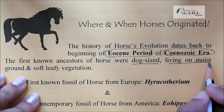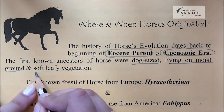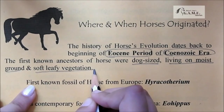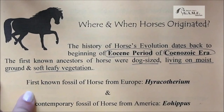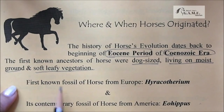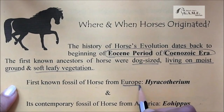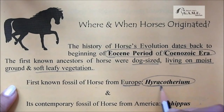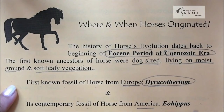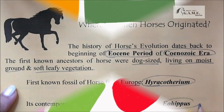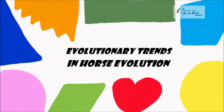The first known fossil of horse from Europe was Hyracotherium, and its contemporary fossil of horse from America is Eohippus. Next, let's look at the evolutionary trends in horse evolution.